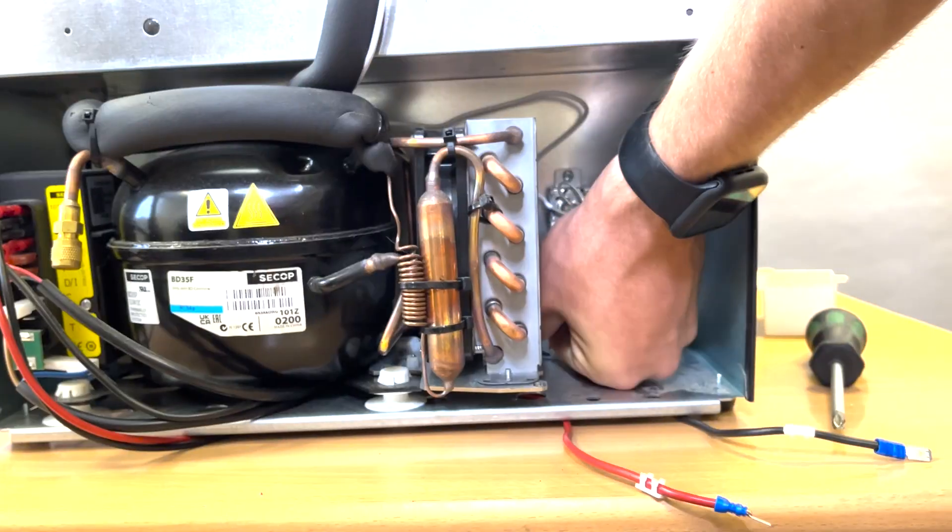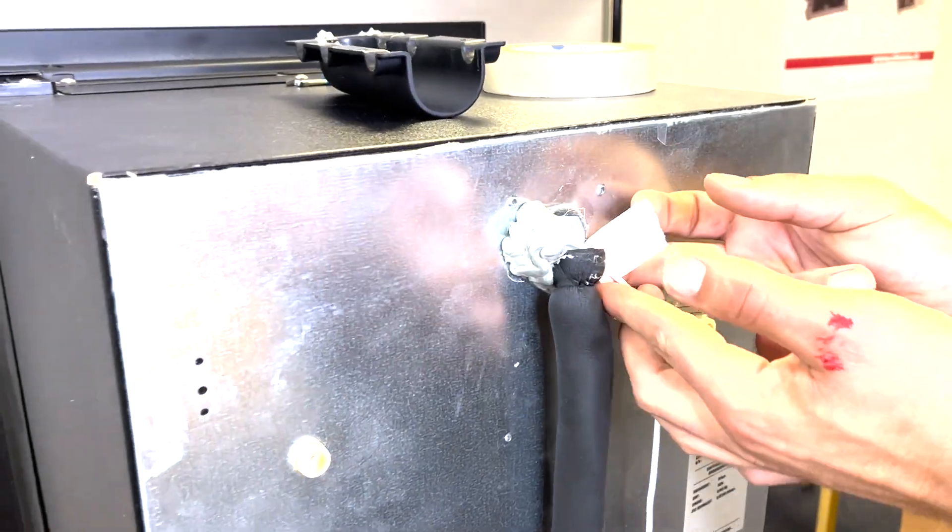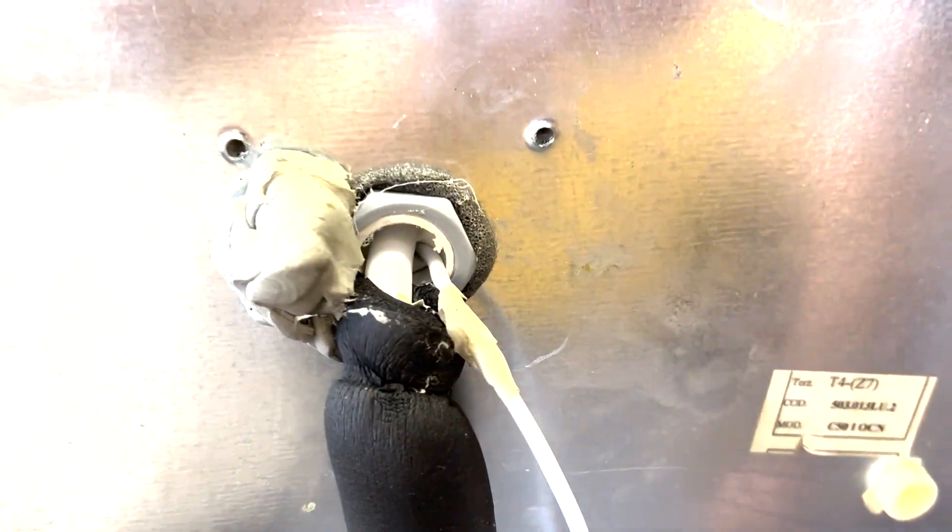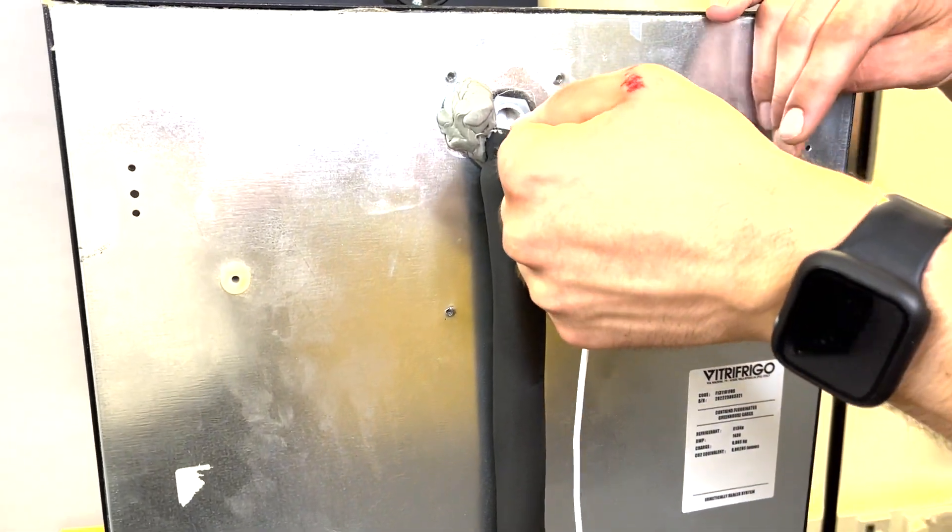Now unplug the two wires. Make sure you make note of the wire positions. Mark the probe with some tape where it exits the back of the fridge so that you know the length of the probe inside the fridge. You can now pull the probe out of the fridge.